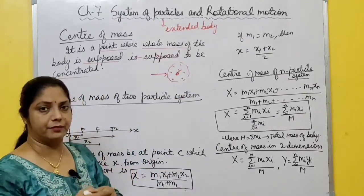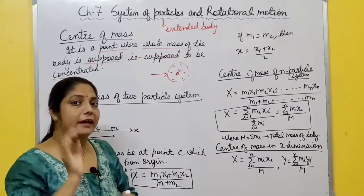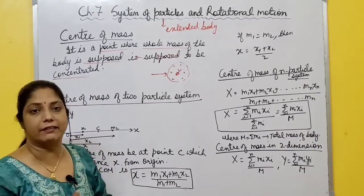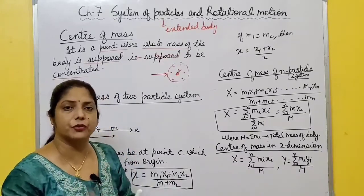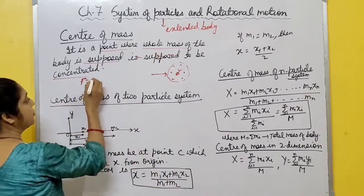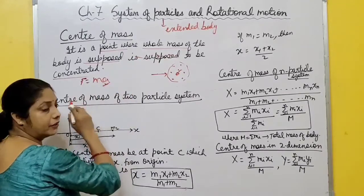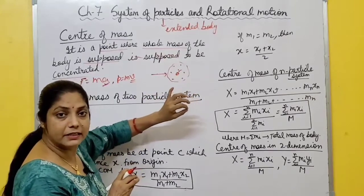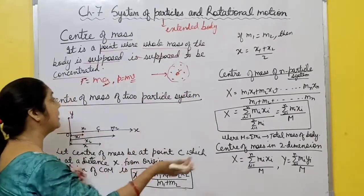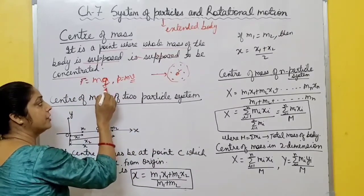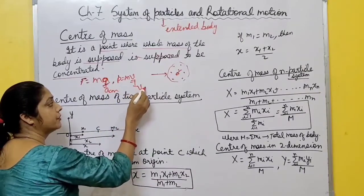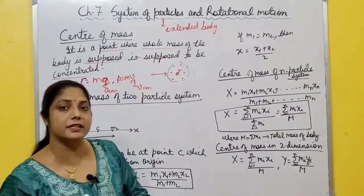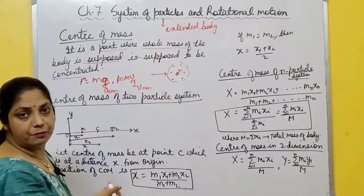If you know the center of mass of any extended body - here we study about rigid body - you can easily study the motion of that rigid body. You can determine velocity, acceleration, force. For a point object, F = ma. For an extended body with large number of particles, if you know the center of mass, then F = m × acceleration of center of mass.